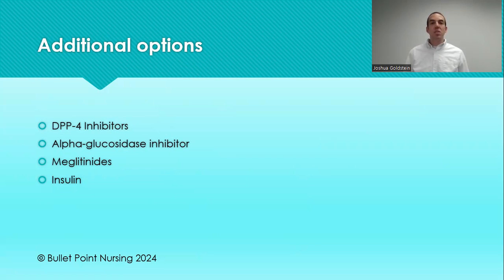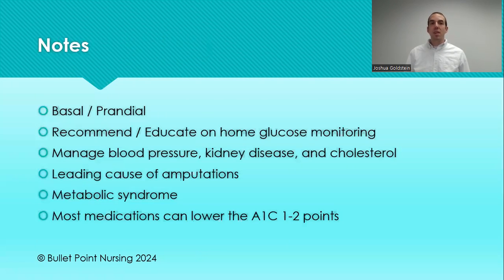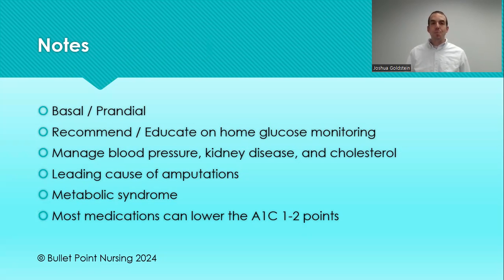There are other options I won't get into in depth here: DPP-4 inhibitors, alpha-glucosidase inhibitors, meglitinides — another class that can cause hypoglycemia — and of course insulin, which we'll cover in an entirely separate video on type 1 diabetes. If you're not familiar with these, go ahead and look them up. Most advanced pharmacology courses will focus on the medications we've covered in this video.